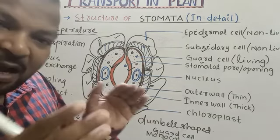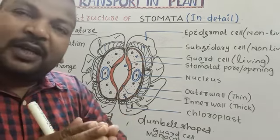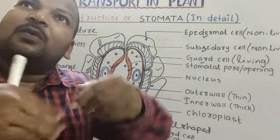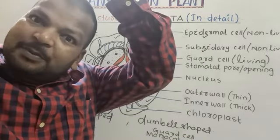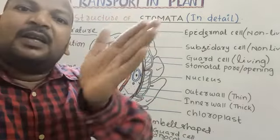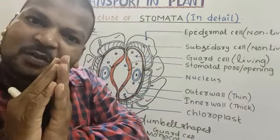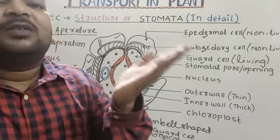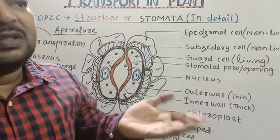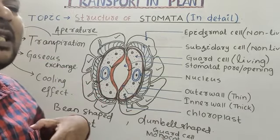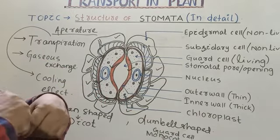When the guard cell opens, stomata open and transpiration occurs. When the guard cell closes, stomata close and transpiration stops.